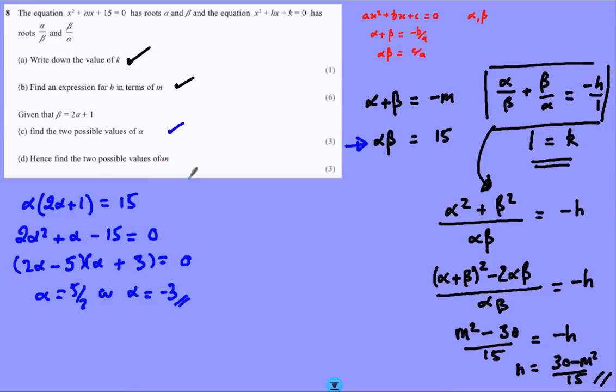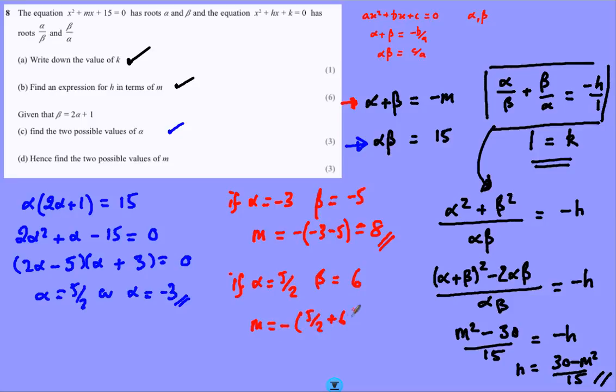For my final part, two possible values of m, I'm going to go back to this one here. So alpha is minus 3, and beta from here is 15 over alpha. And consequently, m would be minus alpha plus beta, which gives 8 as my first value. And if alpha equals 5 over 2, beta equals 15 divided by 5 over 2, which is 6. And m in this case is minus alpha plus beta, which is minus 8 and a half or minus 17 over 2. And there's my two values for m.